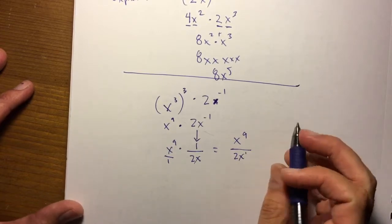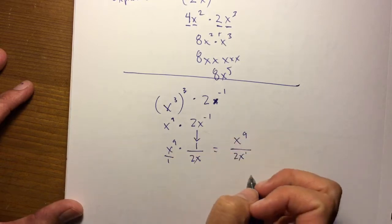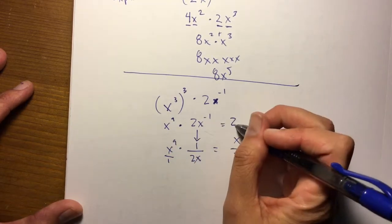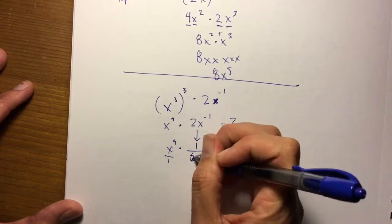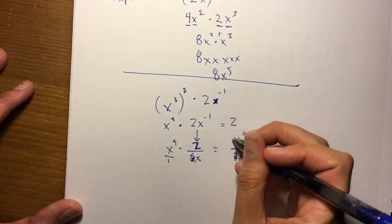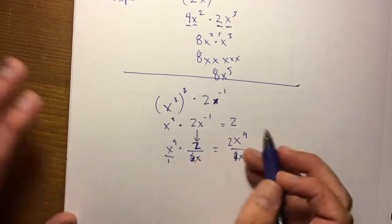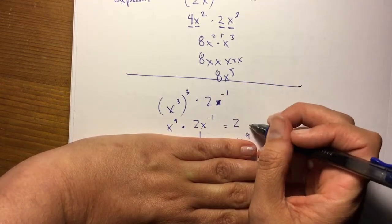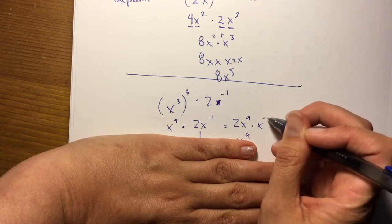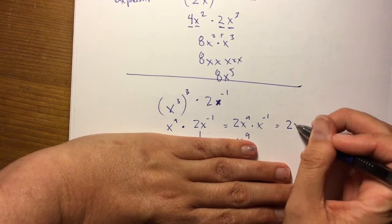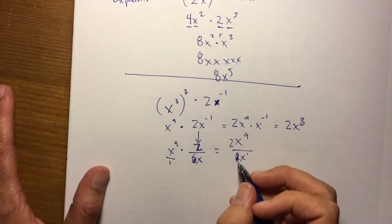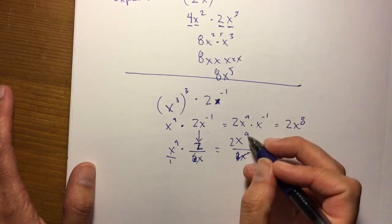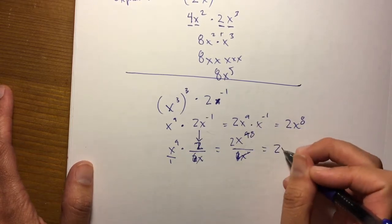We could also have said, if we're multiplying x to the ninth times 2x to the negative 1, we just add the exponents: that's 2x to the ninth times x to the negative 1. So 9 plus negative 1 gives you 2x to the eighth. Looking at the fraction form: we can simplify by crossing out the x on the bottom and one x from x to the ninth, making that an 8 — you get 2x to the eighth either way.